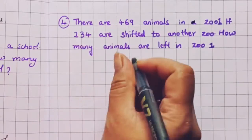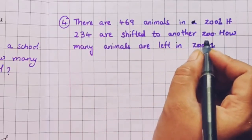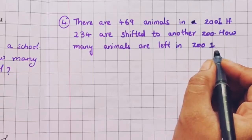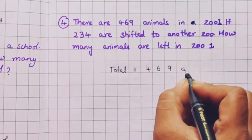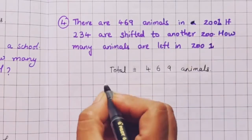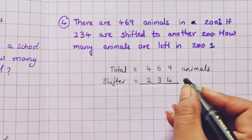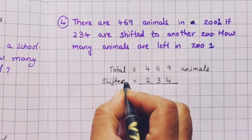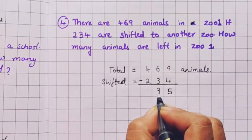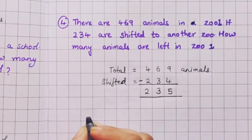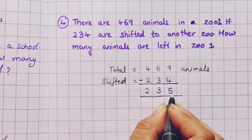Now let us see the next problem. There are 469 animals in zoo 1. If 234 are shifted to another zoo, how many animals are left in zoo 1? Total number of animals is 469. Out of them, 234 animals are shifted to another zoo. Let us do the subtraction: 9 minus 4 is 5, 6 minus 3 is 3, and 4 minus 2 is 2. The answer is 235.